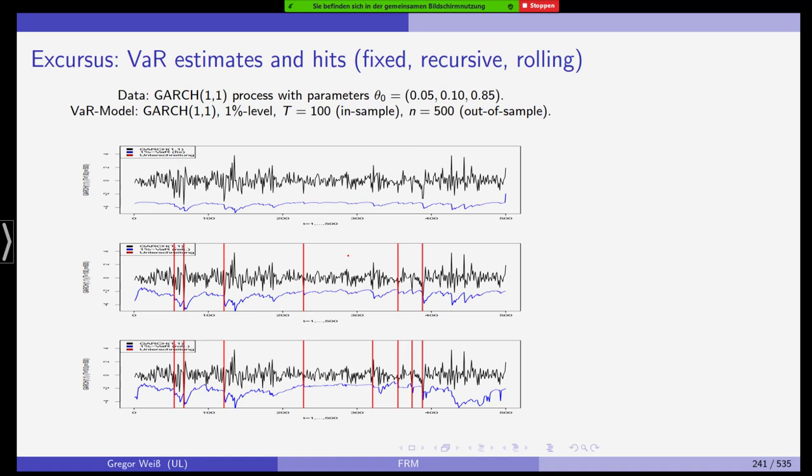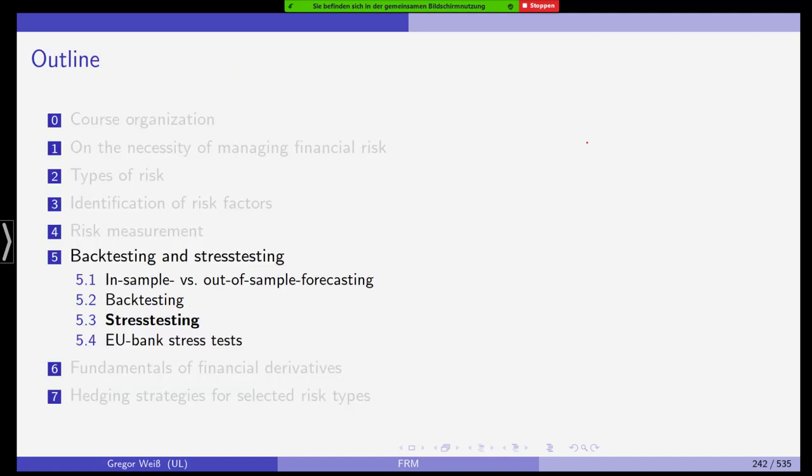You can combine all these tests to check for the correct number and the independence over time from these models. To show you how this actually looks like in practice, this is taken from a research paper of mine. You see, for example, a GARCH model at 1% VAR and those VAR exceedances for different models with different parameters. You can see here you have some VAR violations here, here and here. You can do this with a number of models. I have done this a lot of times.